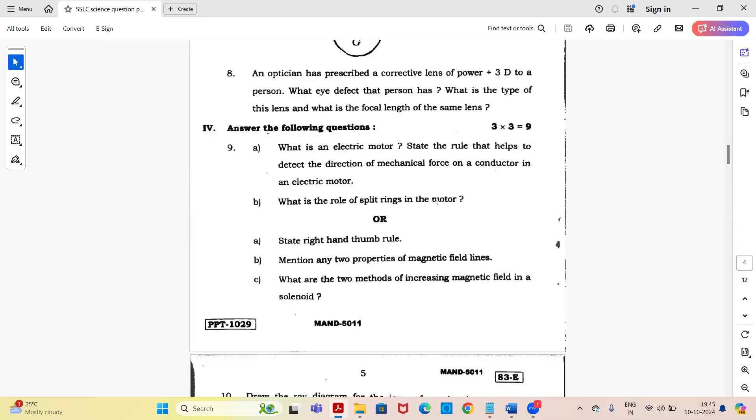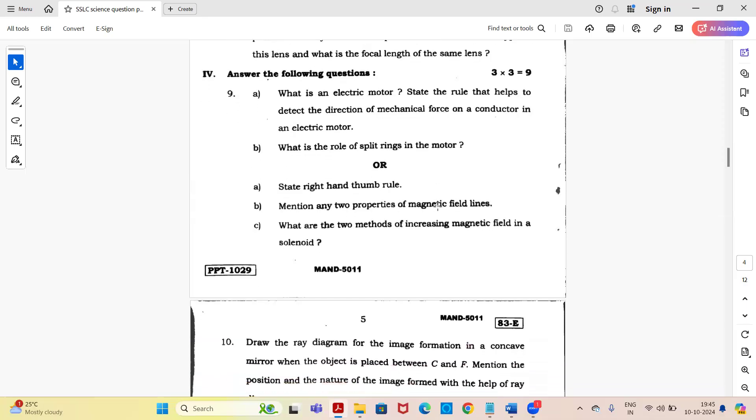Or you have an option. State right hand thumb rule. Mention any two properties of magnetic field lines. What are the two methods of increasing magnetic field in a solenoid? You can attempt either three questions whichever you know best, because option is given here.